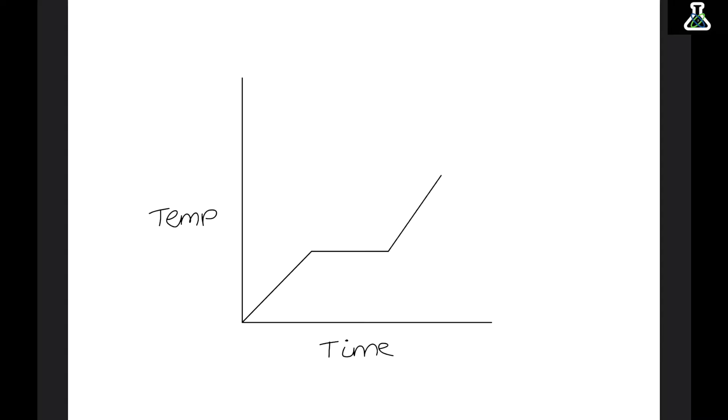Okay so this is a graph to show the time and temperature of something changing state. So we begin heating the substance up and giving it energy so the temperature increases. This flat line is where a state change is happening. And the temperature doesn't increase because it uses the energy we give it to change its state. Once it's changed state it then continues to get hotter. So this flat line in the middle is the one we're interested in. The state change.